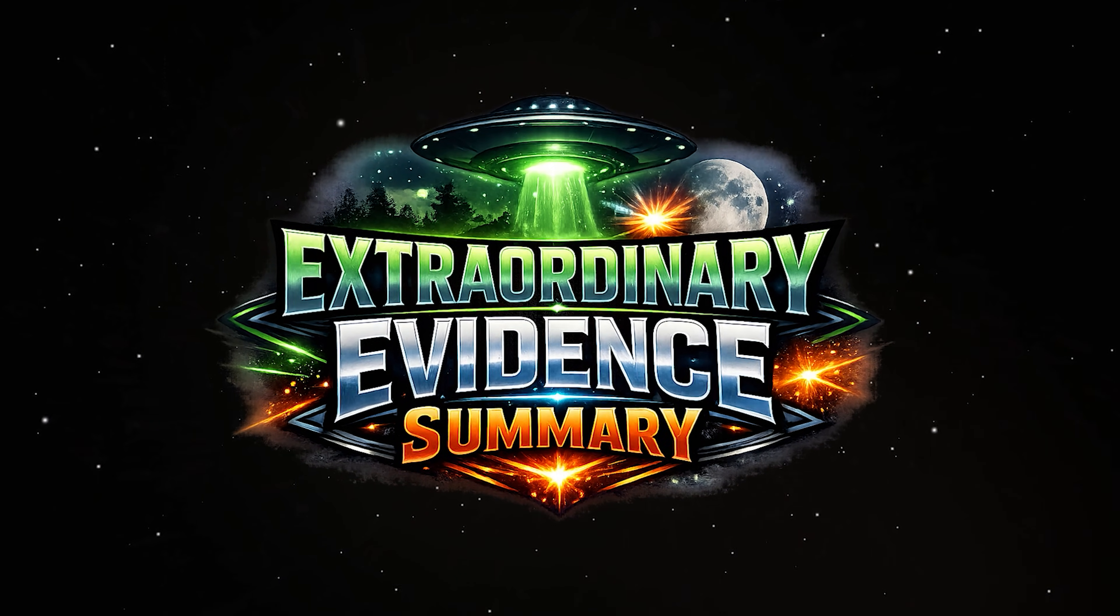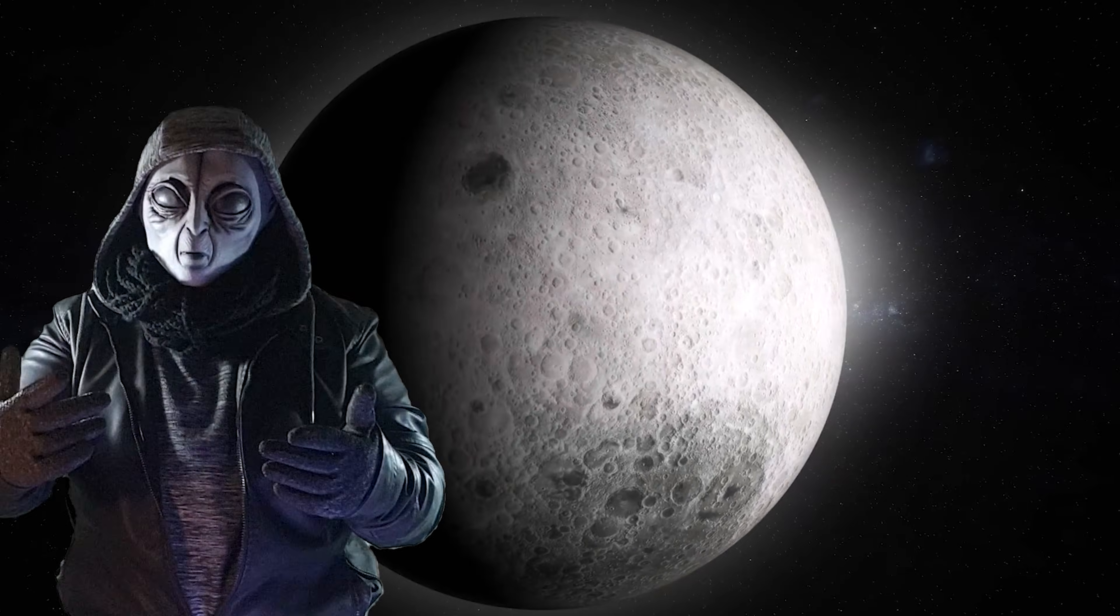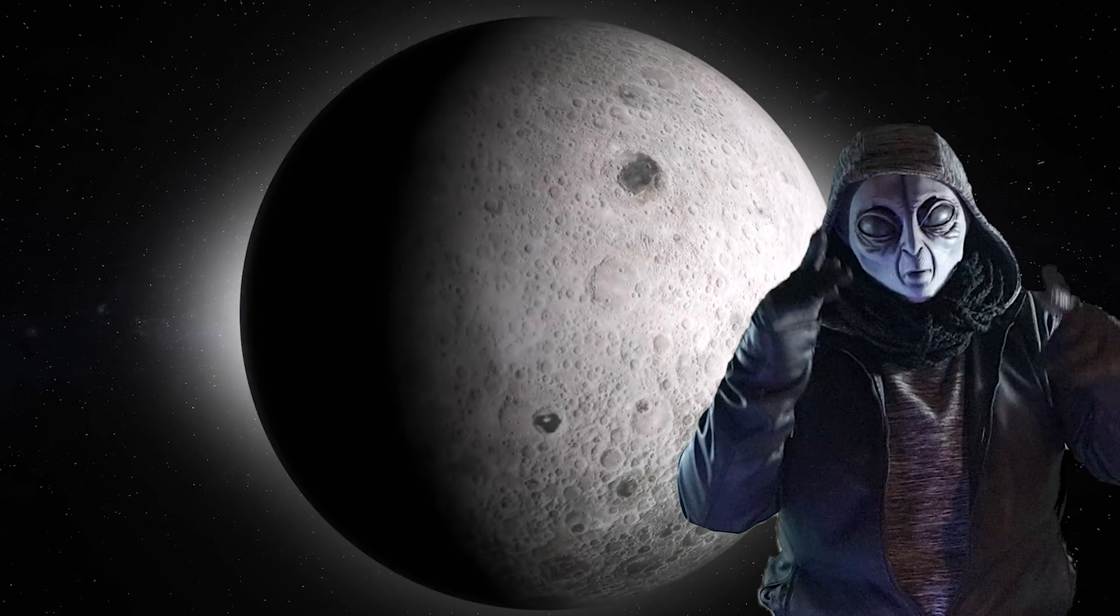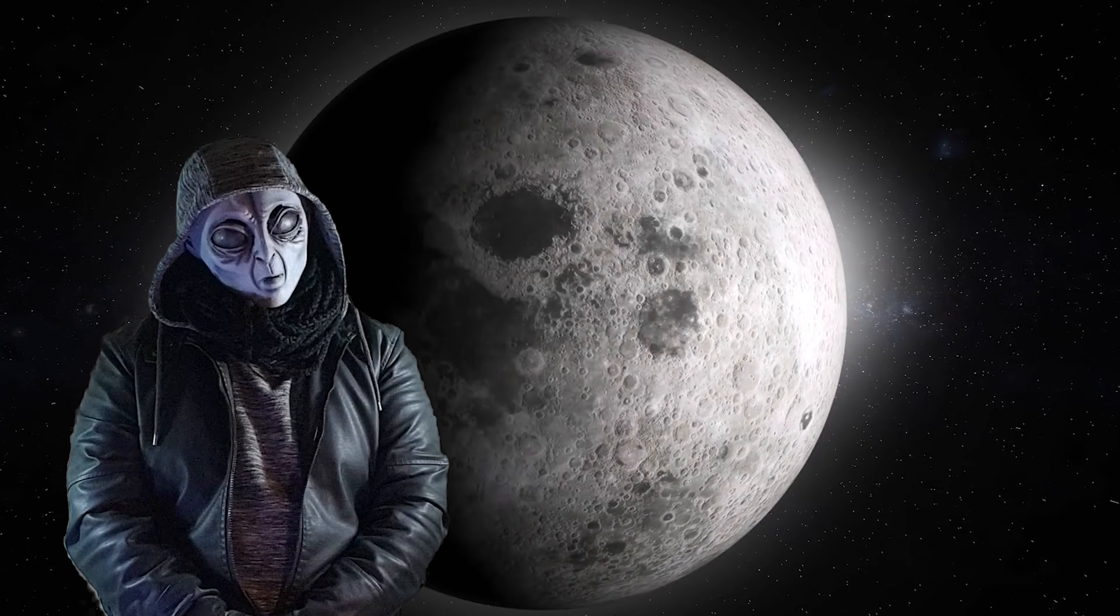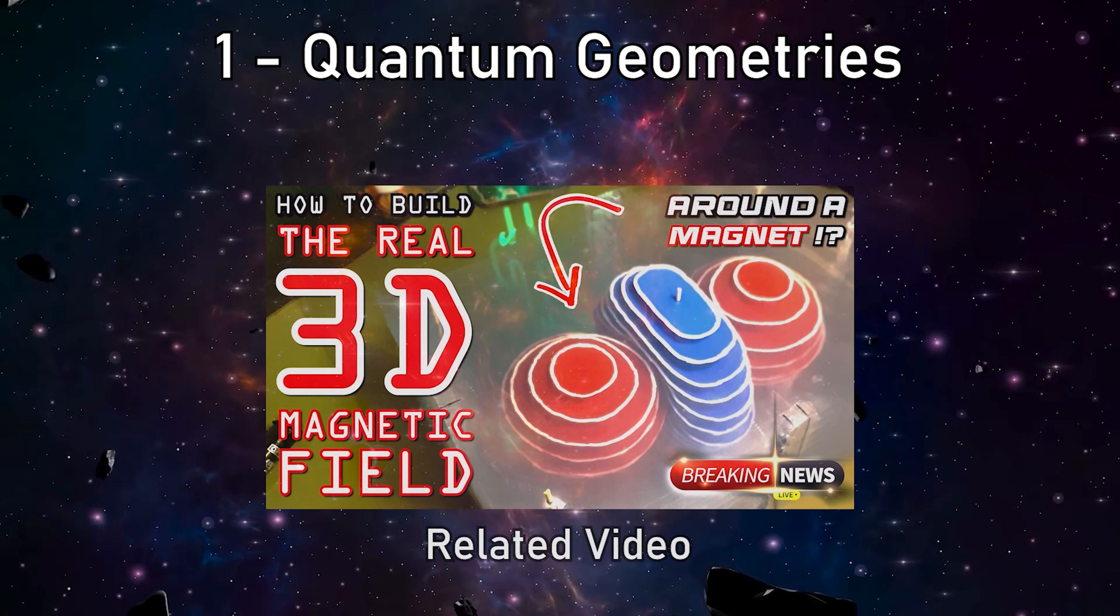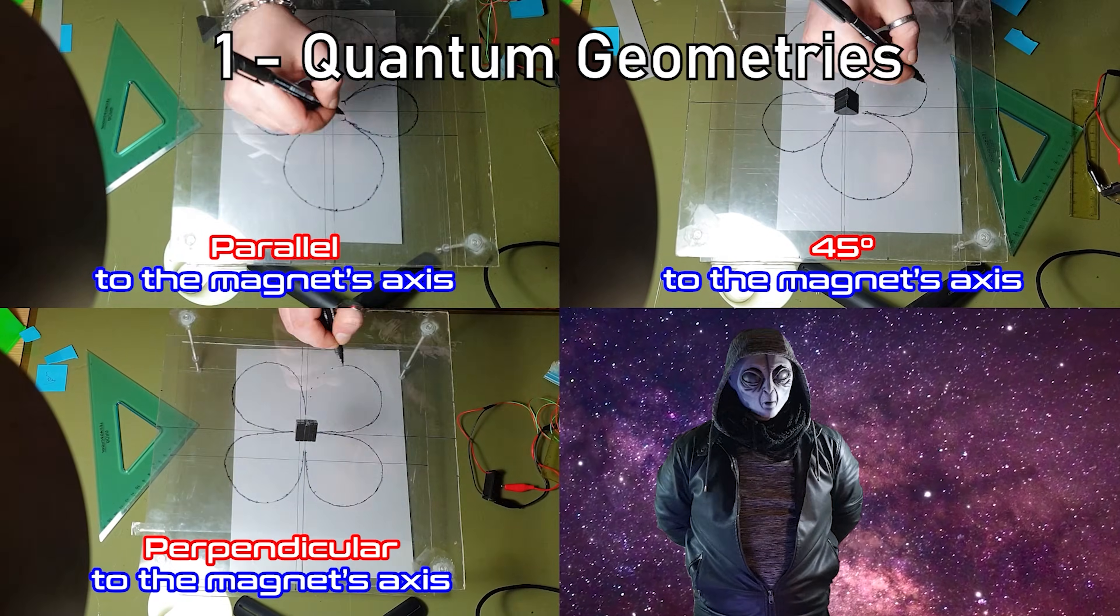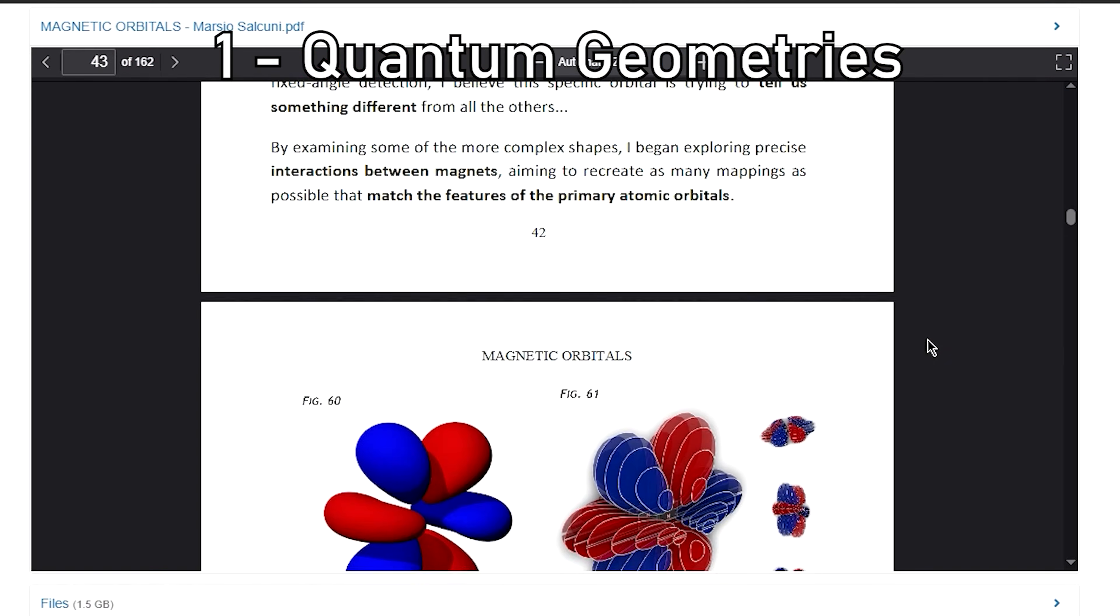Extraordinary Evidence Summary. So now, let's do a fast flyover of the most astonishing and downright absurd results of these experiments. The very same results that you will obtain yourselves once you learn how to use this method. 1. Quantum Geometries. All detected geometries correspond, in the smallest details, to the atomic orbitals described by quantum mechanics.